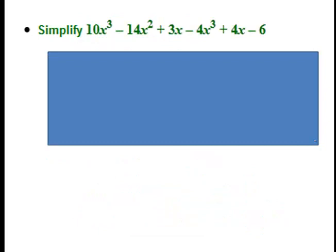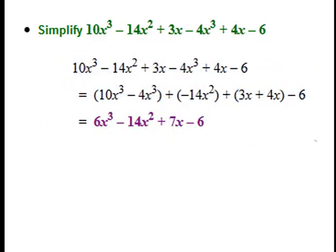Pause the video and see if you can do this next one. Make sure you know how to do this — don't just listen. When you start it back up, you should have gotten 6X³ minus 14X² plus 7X minus 6, from combining your like terms.